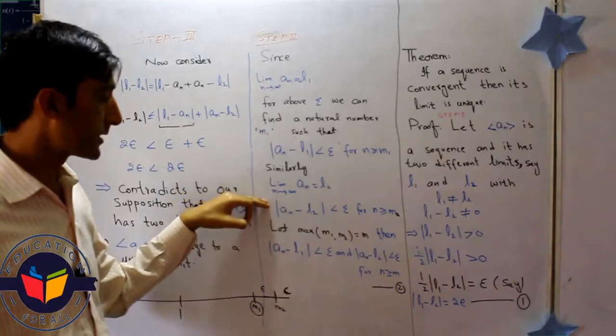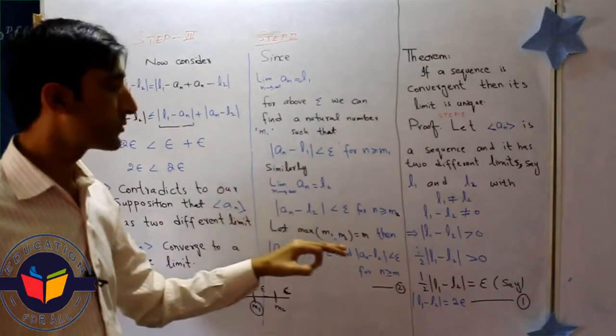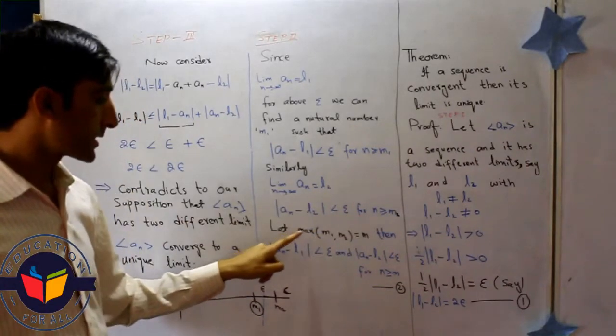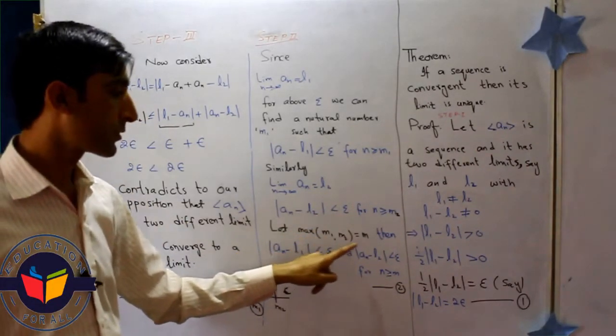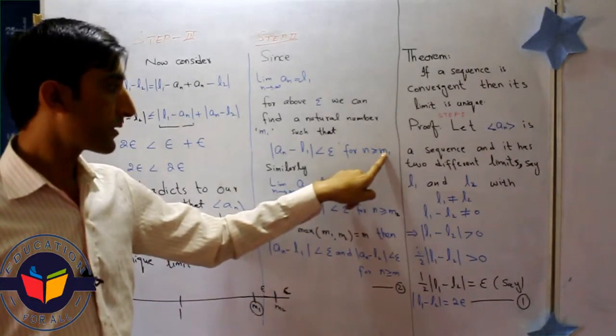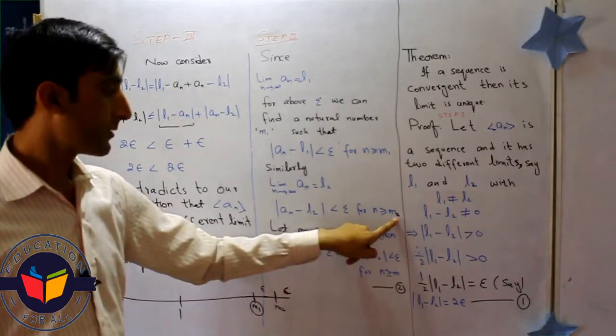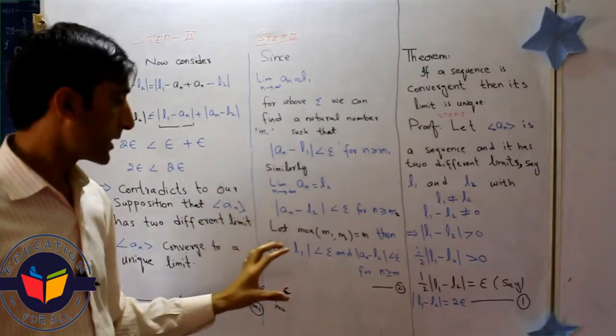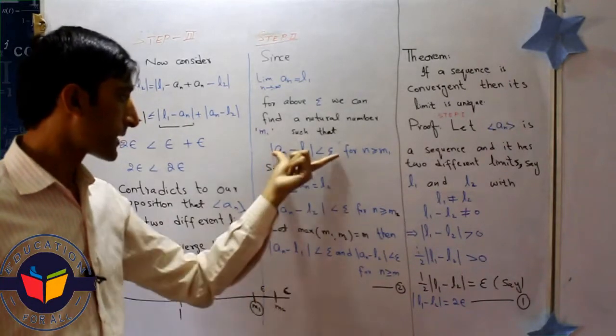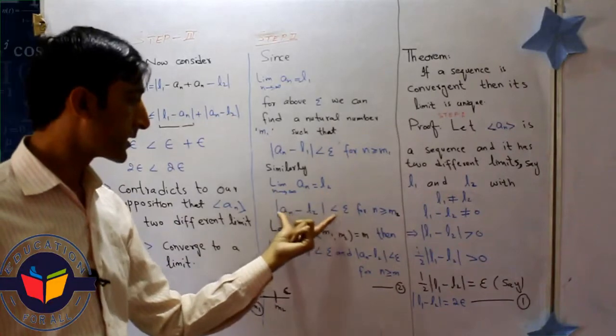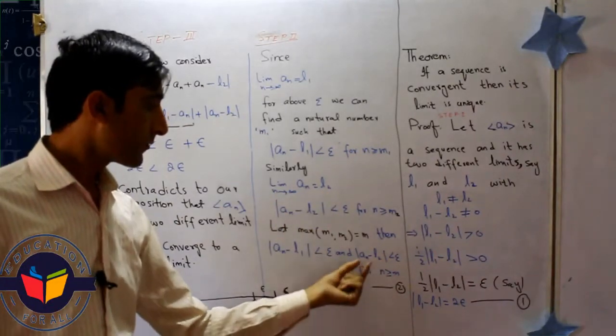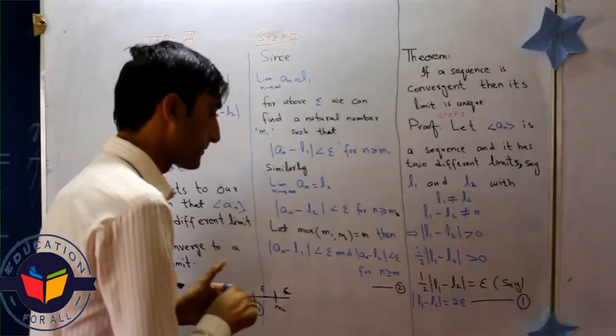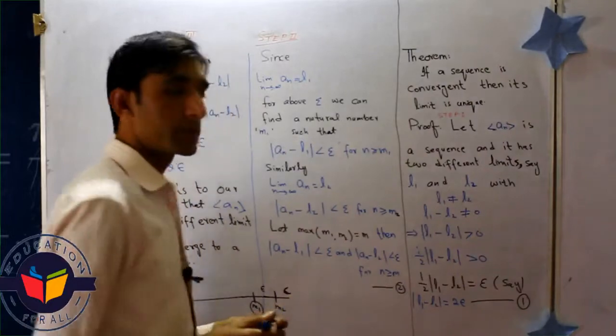Students, if I want to combine both of these statements, I should choose the maximum of both m1 and m2. For this purpose, I write maximum of m1 and m2 equal to m. If I replace m1 by m and m2 by m, the given results can be combined. We can combine both of these with this condition, that is just m. This one is equation two.